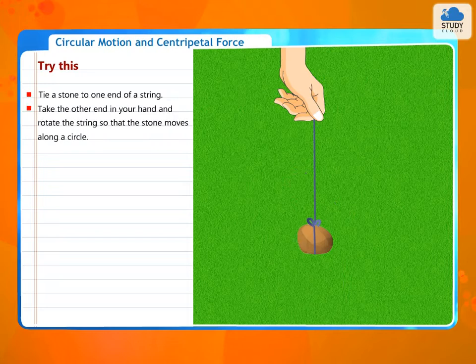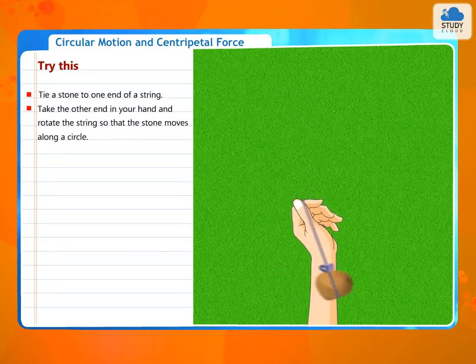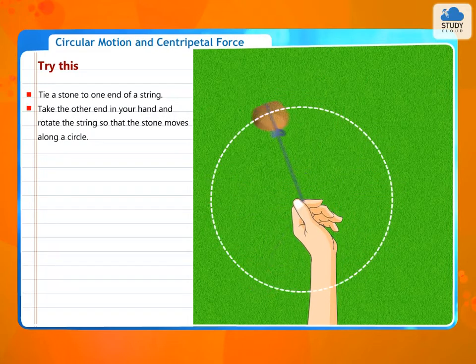Circular motion and centripetal force. Tie a stone to one end of a string. Take the other end in your hand and rotate the string so that the stone moves along a circle.